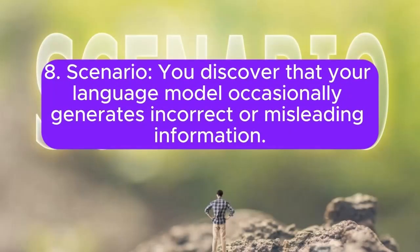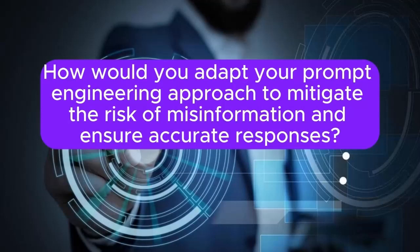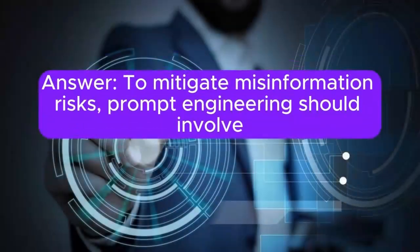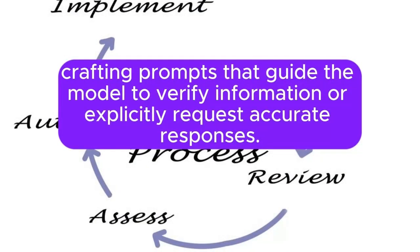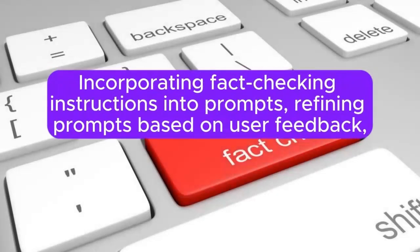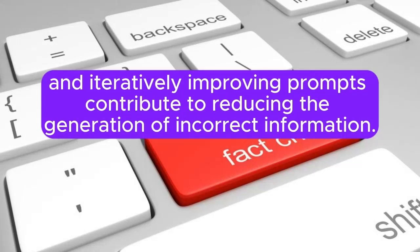Scenario 8: You discover that your language model occasionally generates incorrect or misleading information. How would you adapt your prompt engineering approach to mitigate the risk of misinformation and ensure accurate responses? Answer: To mitigate misinformation risks, prompt engineering should involve crafting prompts that guide the model to verify information or explicitly request accurate responses. Incorporating fact-checking instructions into prompts, refining prompts based on user feedback, and iteratively improving prompts contribute to reducing the generation of incorrect information.